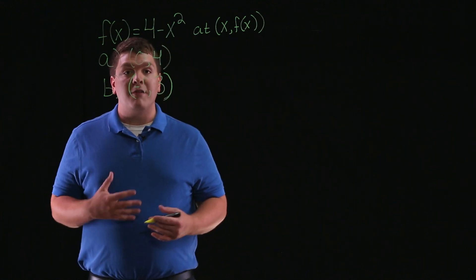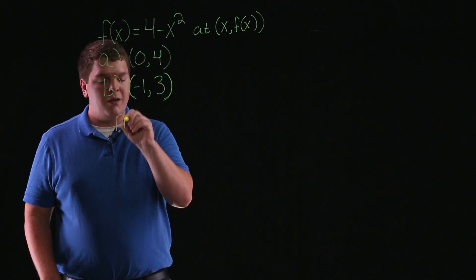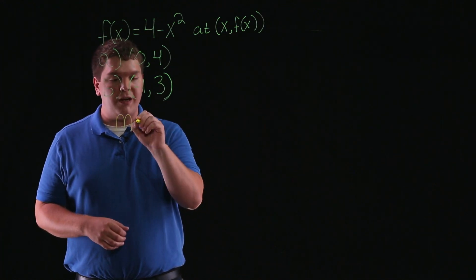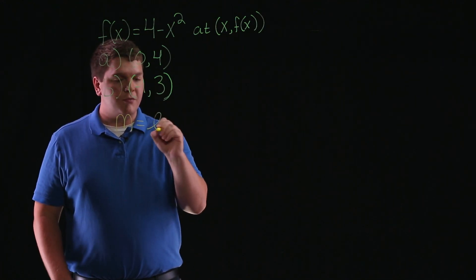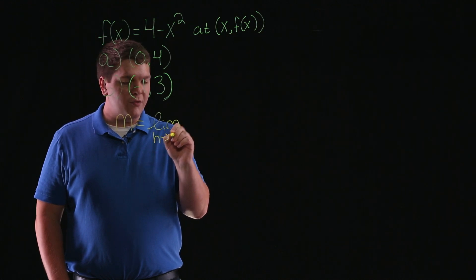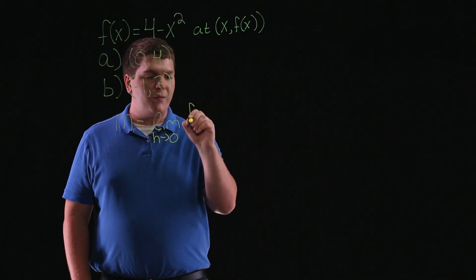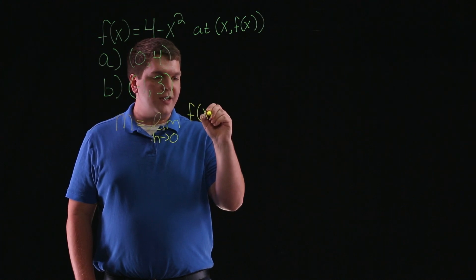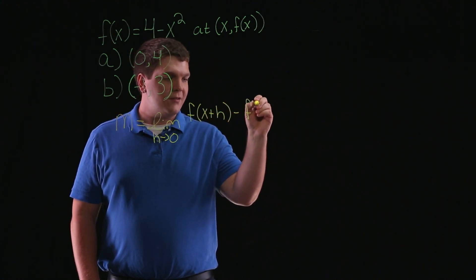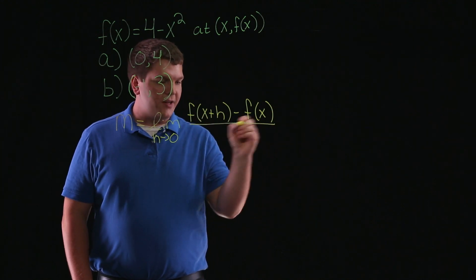So let's begin by writing down the formula we're going to use for slope. It's going to be given by m, where m is the slope of the graph, equal to the limit as h approaches 0 of f of x plus h minus f of x, all divided by h.